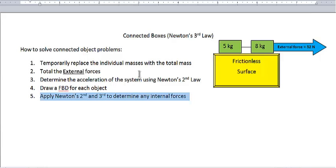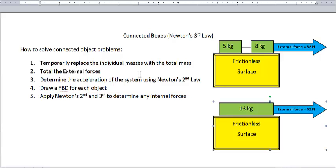So let's see how that works. Step 1 temporarily replace the individual masses with the total mass. Well I've drawn this picture here where I took the 5kg and the 8kg and I replaced them with the 13kg. So that's step 1, mass is 13kg. Step 2, total of the external forces, that's just this 52 Newtons.